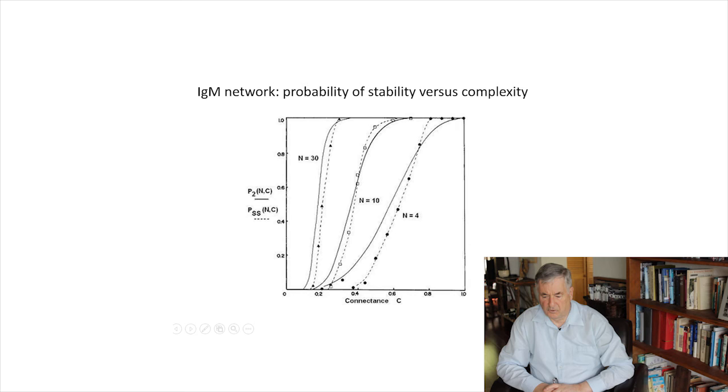This is the probability of stability as a function of complexity. You can see the complexity is given by the parameter C, the connectance of the network, and the size of the system, N, the number of different clones. What you can see is that the probability of stability increases as a function of both of those measures of complexity.